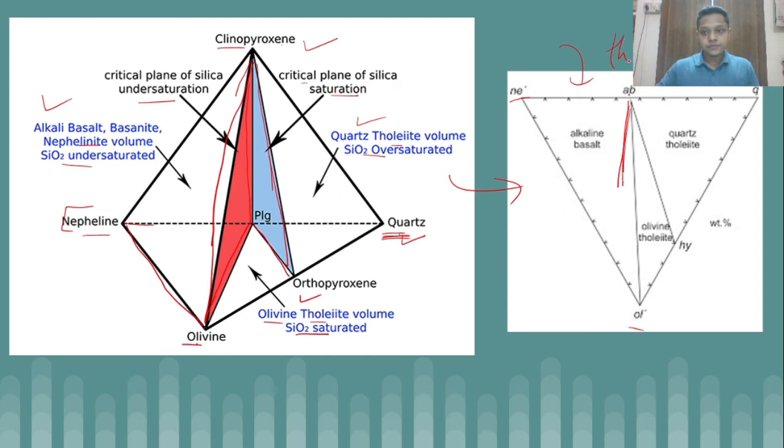This thermal divide can only be observed at low pressures only, and this is quite important because this is the separation which separates the two series, two important series of basalts. One is the alkaline basalt, one is the tholeiitic or sub-alkaline basalts. In sub-alkaline again we find two types of series: one is tholeiitic series and one is calc-alkaline series. For that concept you can refer to our video; I will share the link of this video in the description.